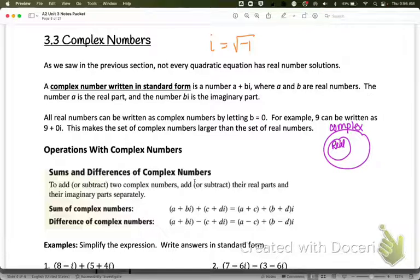That means all real numbers are also complex numbers because I could write them as a plus 0i, and the complex numbers are a plus bi where b is not 0.